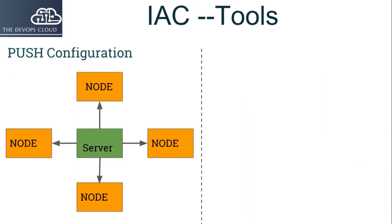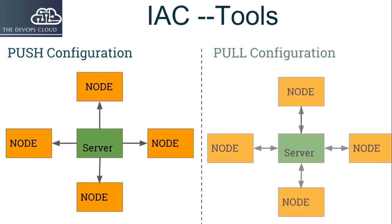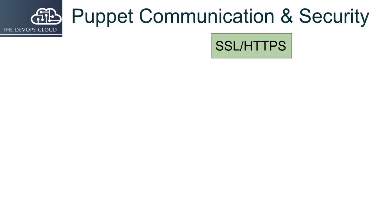In this course we will learn the infrastructure as code model and how Puppet as a tool can help you to describe your infrastructure as code. Then we will learn the push and pull method and get to know which method Puppet uses to apply the catalogs.